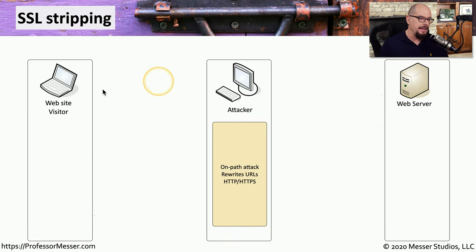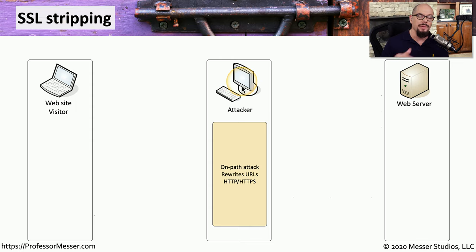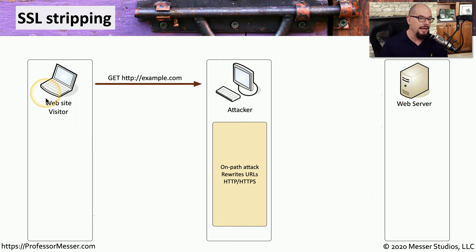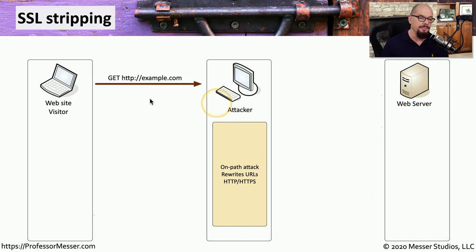In an SSL stripping attack, a website visitor is communicating to a web server, but in the middle is the attacker. This attacker is proxying or sitting on-path to modify any communication going back and forth between the two devices. To start a normal web server communication, the client sends a GET command — in this case, the visitor sends an HTTP URL to the web server. Since the attacker is sitting on-path, it receives this command and sends it unchanged to the web server.